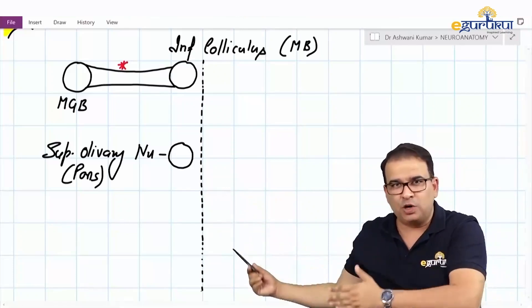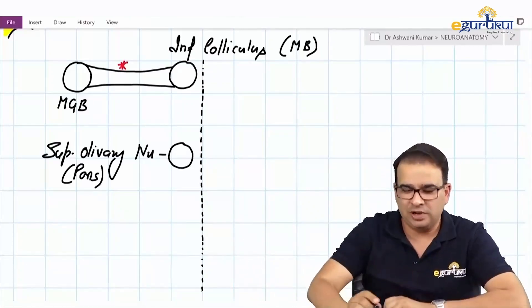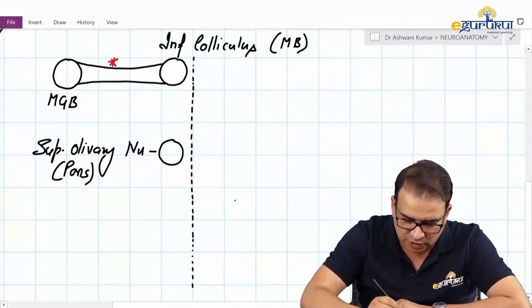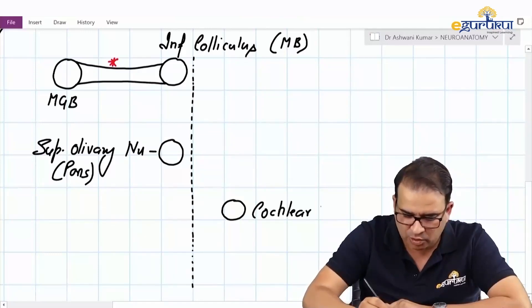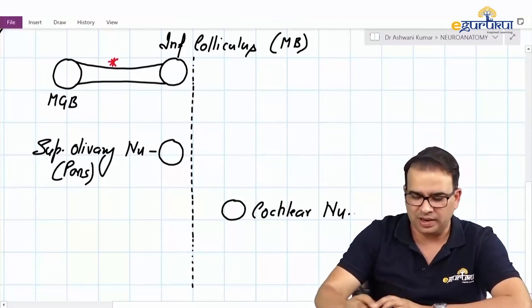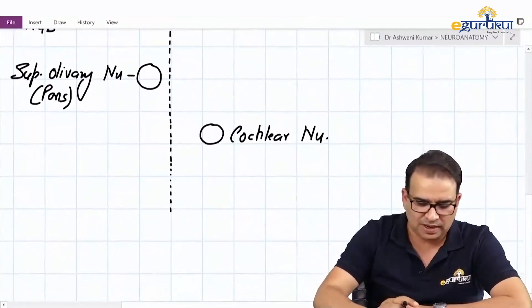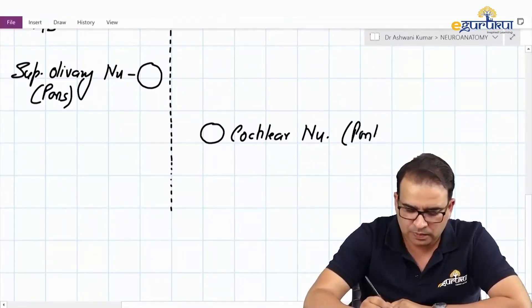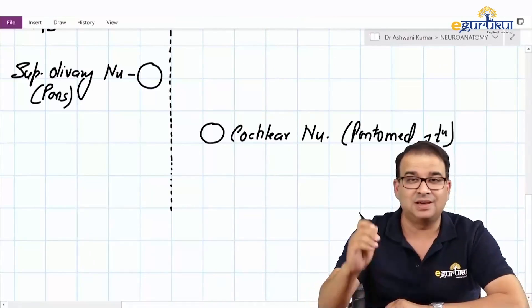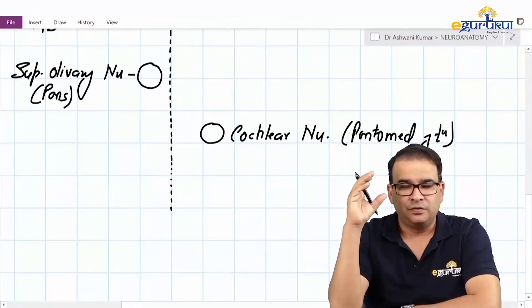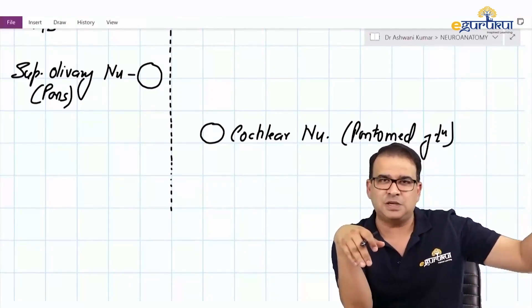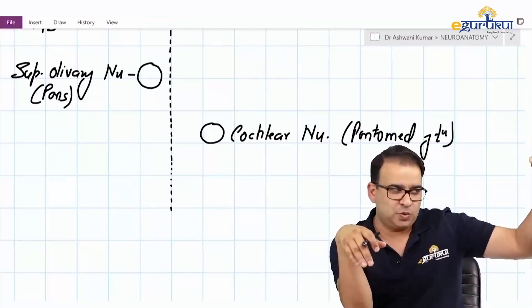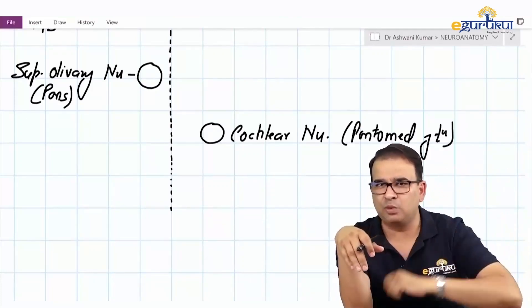Going below the pons to the medulla, at the pontomedullary junction we have the cochlear nuclei. These cochlear nuclei are situated close to the pontomedullary junction — something we discussed in the cranial nerve nuclei and column. If you remember, the vestibulocochlear nucleus was in the last column, SSA (special somatic afferent), and its situation is more or less at the pontomedullary junction.